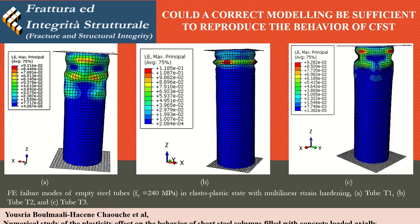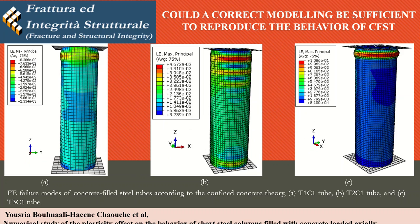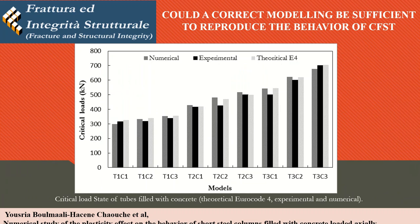The T3C1 and T3C2 tubes show similar failure modes for the different behavioral laws, which leads us to assume that the variation of the plasticity behavioral laws does not influence the behavior of the model. However, we can assume that improvement of the material characteristics can have a positive effect.